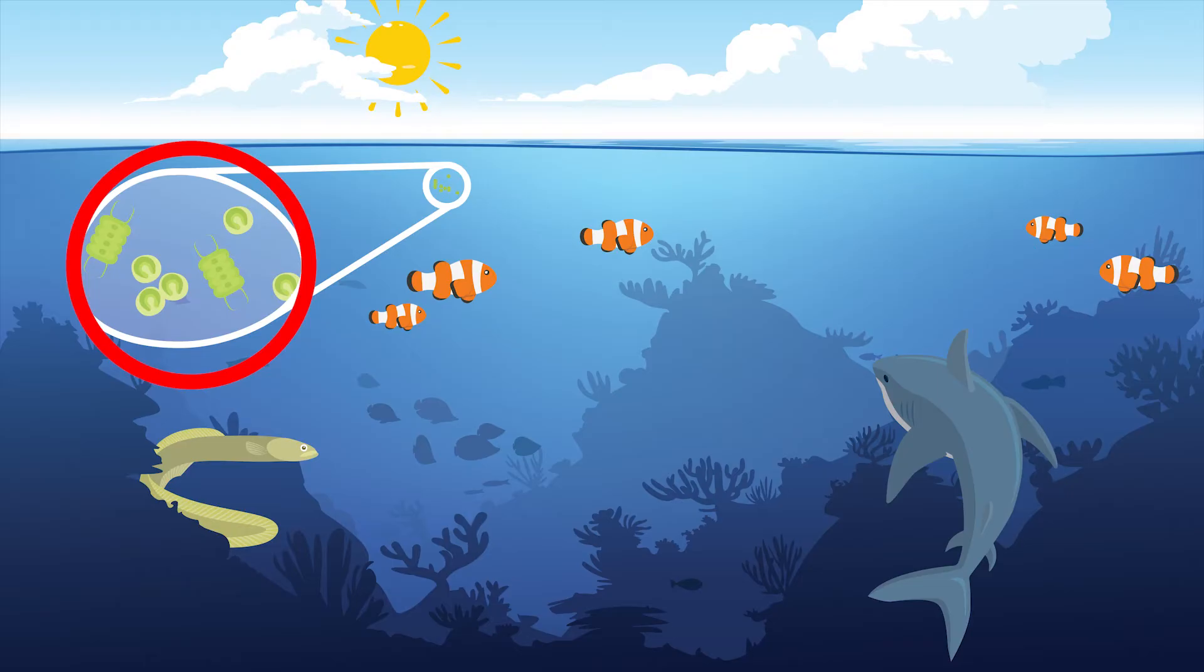Phytoplankton, a type of microscopic algae, are the producers in this ecosystem. They harness energy from the sun and turn it into chemical energy through photosynthesis. So, let's add an arrow pointing from the sun to the phytoplankton to show the flow of energy.